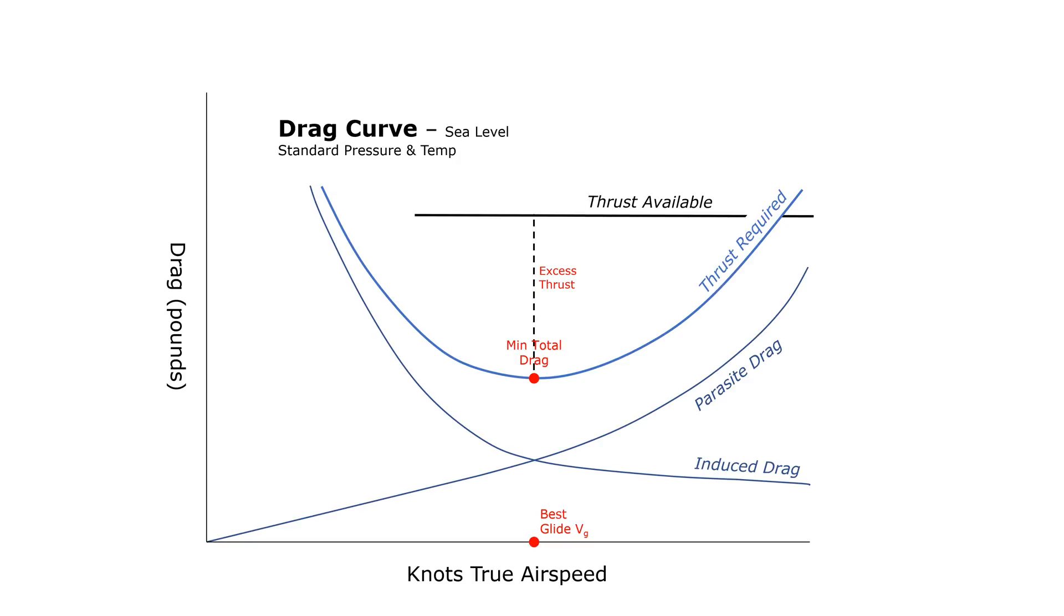If we were flying a jet, we might be right, but a propeller aircraft is actually able to produce more thrust at lower speeds because at higher angles of attack, our blade is taking a bigger bite of air. So our thrust available curve looks like this.